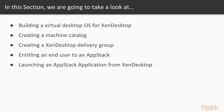Next, we will configure the Citrix delivery-specific components and create a machine catalogue and then a delivery group. Then we will assign an app stack to an end user before finally logging in as that same user and testing that they can launch the applications on their XenDesktop virtual desktop machine.